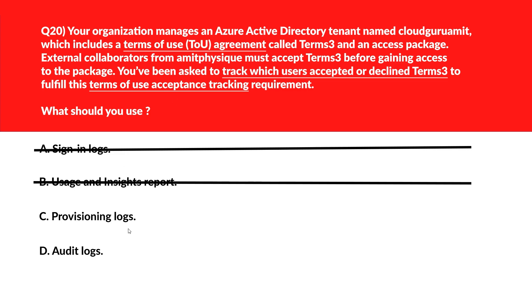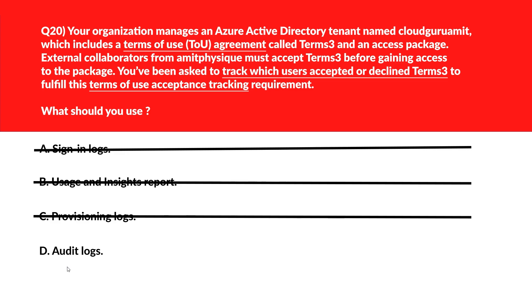Option C: Provisioning logs reflect identity provisioning activities, not user interactions with terms of use. Wrong choice. Option D: Audit logs capture user actions related to terms of use, including acceptance or decline events, making them the authoritative source for this requirement. Option D — Audit Logs — is the right choice.